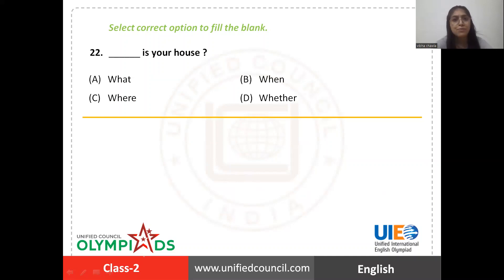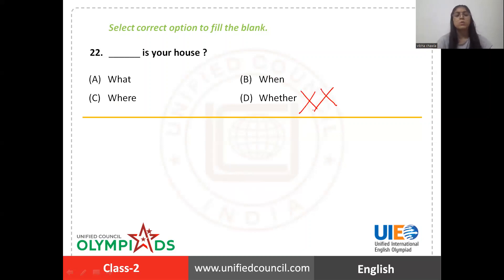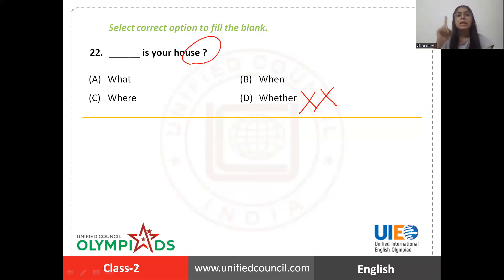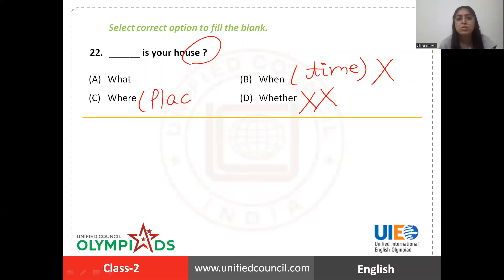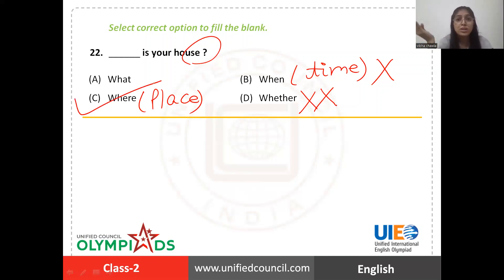Next question: fill in the blank — blank is your house? Options are: what, when, where, or whether. Option D, whether, can be ruled out — it is not a question word used to form questions. When is used to ask about time; you can't ask the time of a house. Where is used to ask about a place or location.